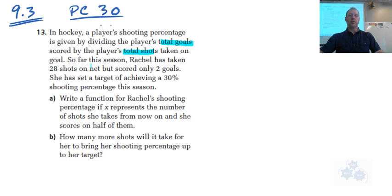That's shots that are taken on goal. So far this season, Rachel has taken 28 shots on net and scored only two goals. She set a target of achieving 30% shooting percentage this season. So far she's 2 out of 28, not quite 30%.